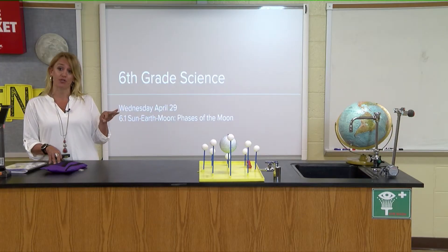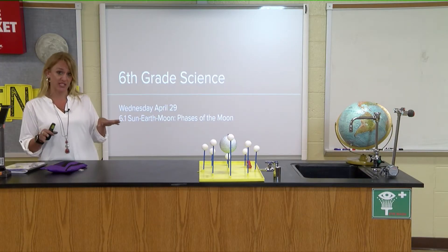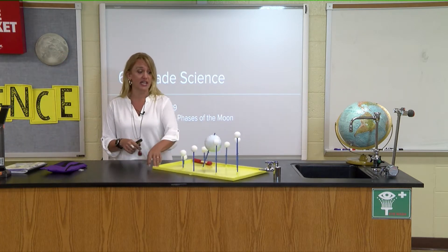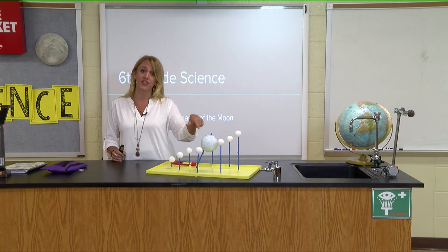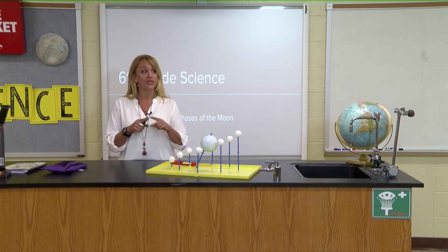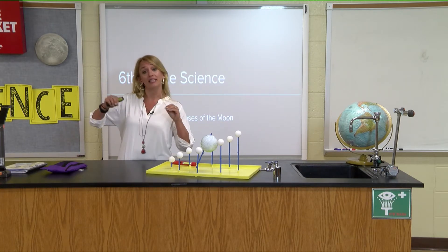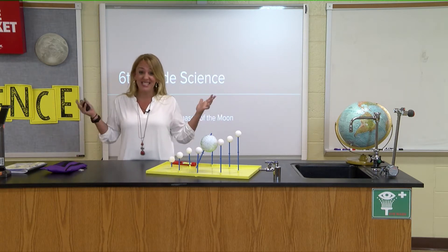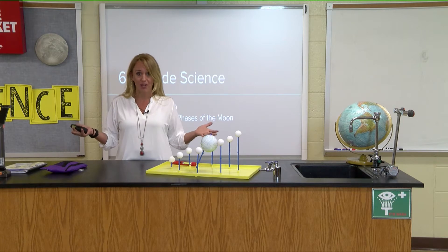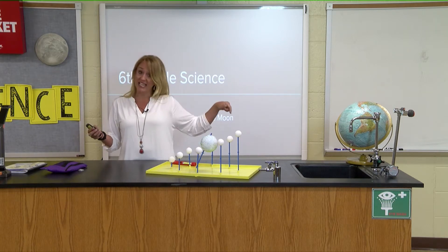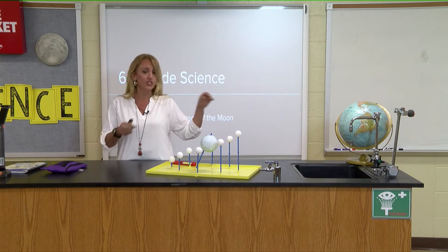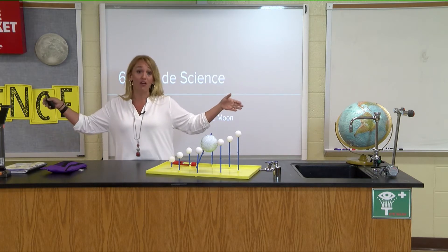Just to kind of recap, last week we did three different models of the Earth and the Moon system. We talked about the size model, which you can kind of see here, where the Moon is one-fourth the size of the Earth. Then we did a distance model, where we pulled that distance on a string out in the hallway, and what we found was that distance is a lot bigger than what we thought — it's actually nine and a half times the distance at the equator. So we pulled that string and saw how far that is.